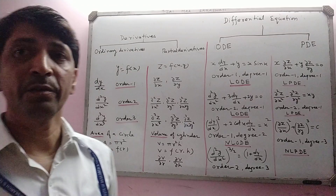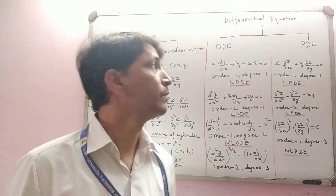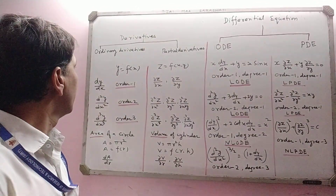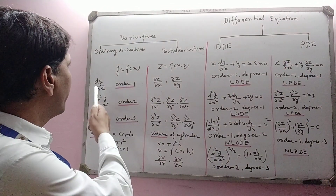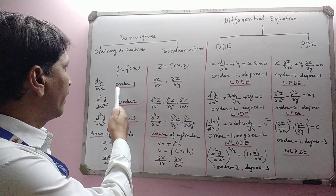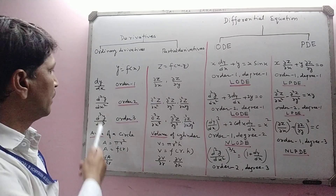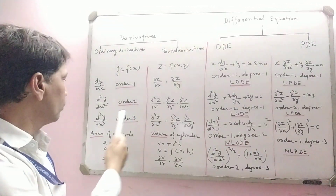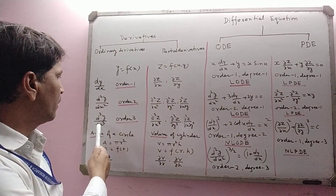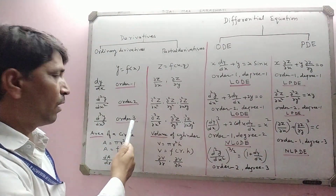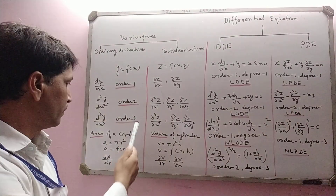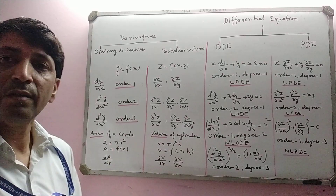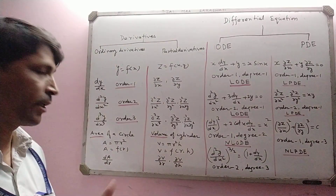If y is a function of x, then we find dy/dx — ordinary derivative of order 1; d²y/dx² — ordinary derivative of order 2; d³y/dx³ — ordinary derivative of order 3. For example, if we take the area of a circle, A = πr², here A is a function of r.